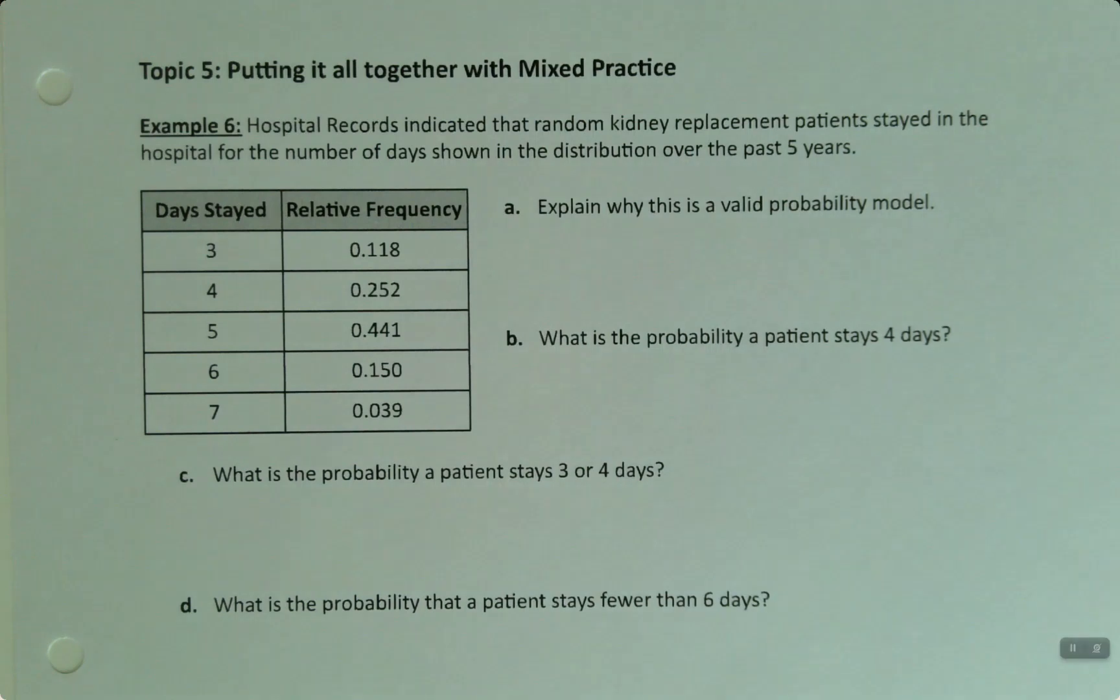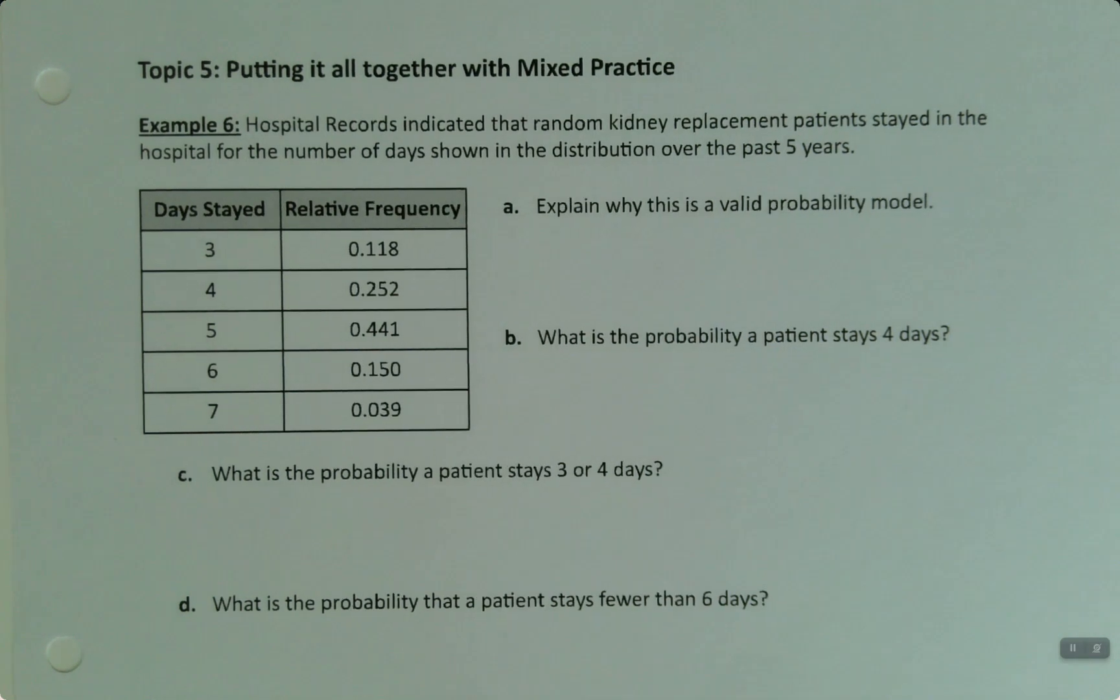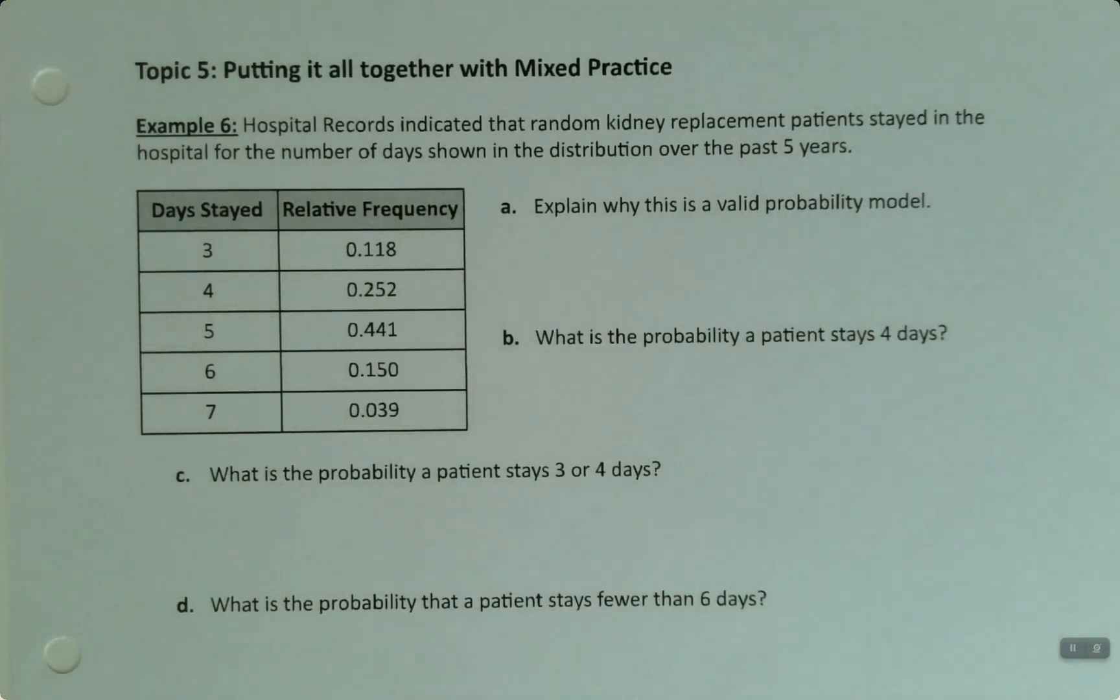So let's put everything we've learned from sections 5.1 and 5.2 together in one problem. Hospital records indicate that random kidney replacement patients stayed in the hospital for the number of days shown in the distribution over the past five years.